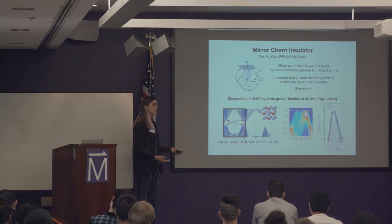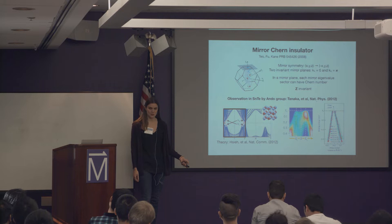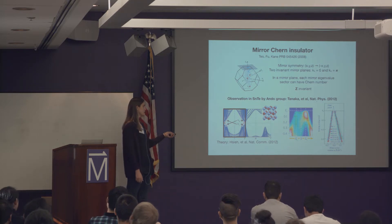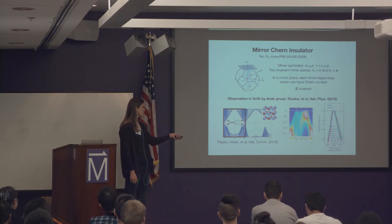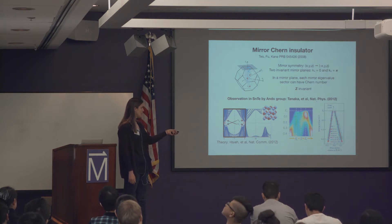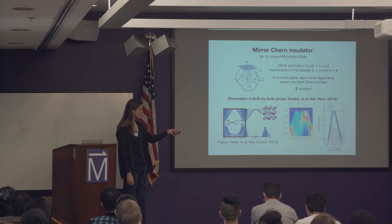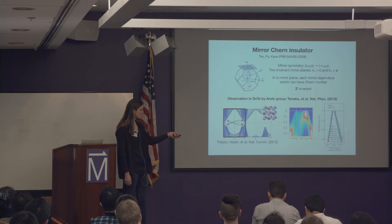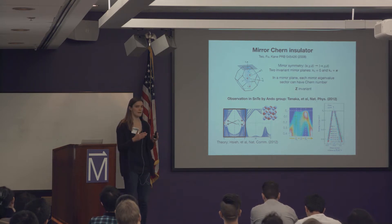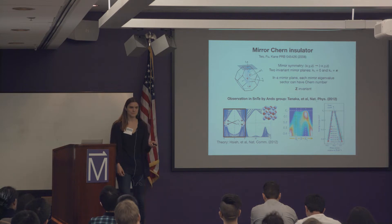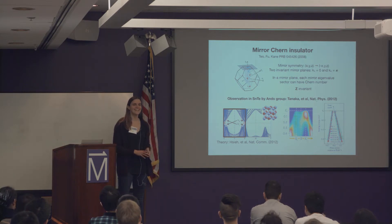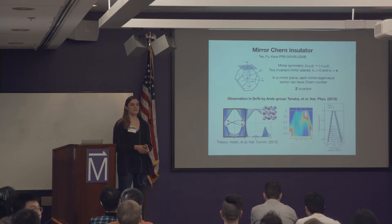This is a neat example: if we looked at the Z2 invariant using just time reversal, it would be zero — there are two crossings, so even parity means trivial Z2. But with mirror symmetry, we can say there's a mirror Chern number of two. This shows how crystal symmetry can refine the classification of topological insulators. Measurement data of tin telluride shows the Fermi level just below the Dirac point, and they observe the bits of the cones.